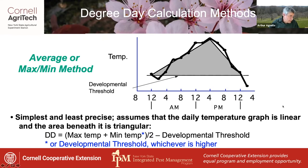This means that degree days equals the average of the max and min temperatures — or the average of the max temperature and the developmental threshold if it's higher — minus the developmental threshold value.